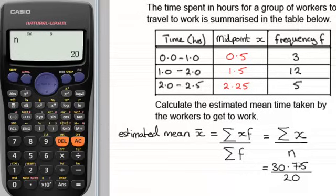So we just need to do this division here. And you could do this division quite easily either on the calculator just directly. You could do 30.75 divided by the 20 and then equals and you're going to get 1.5375.